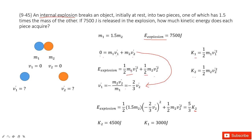First, we input m1 as 1.5 m2 and v1 as negative two-thirds v2. Then we simplify this equation.